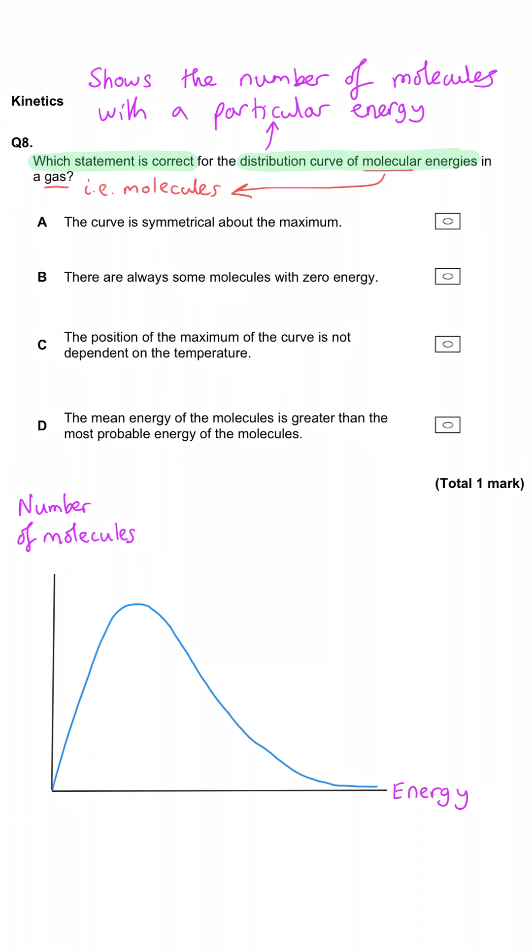Is it A, the curve is symmetrical about the maximum? No, you can see from the diagram that I've drawn that on the left-hand side, it's a nice regular slope on its way upwards, but on the right-hand side, it's an asymptote.